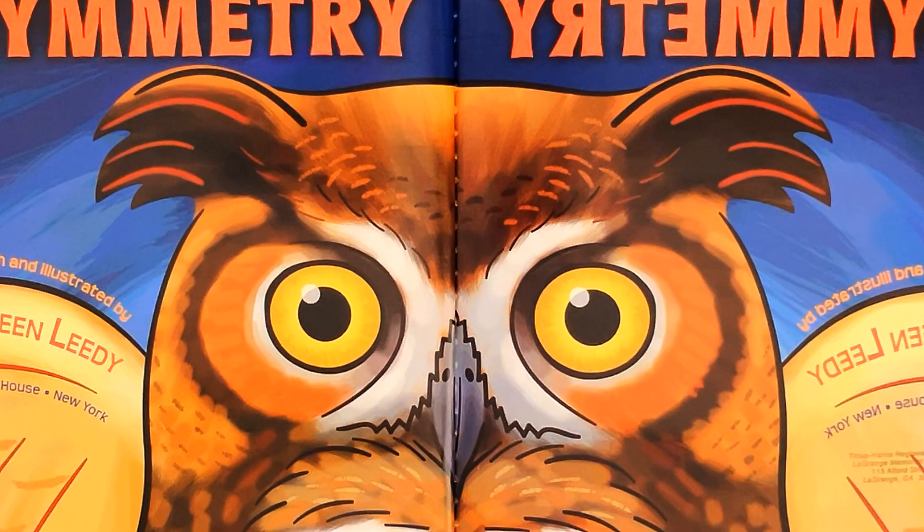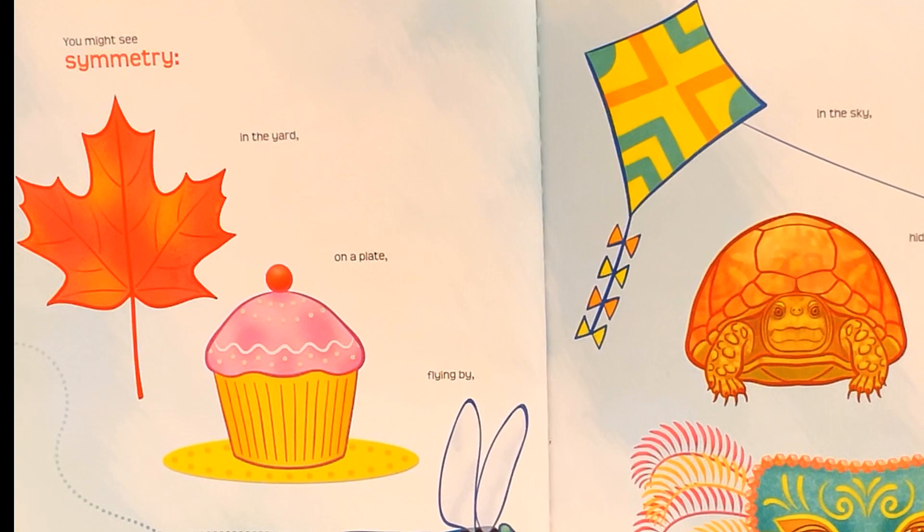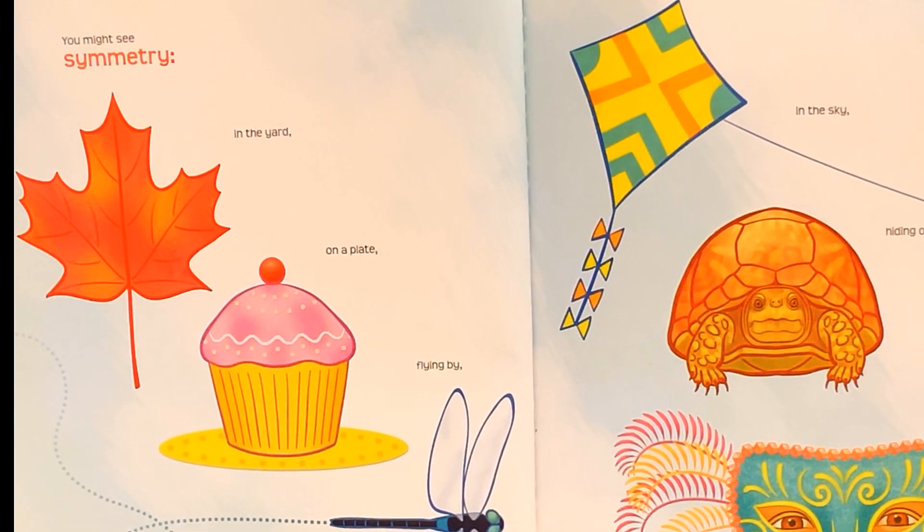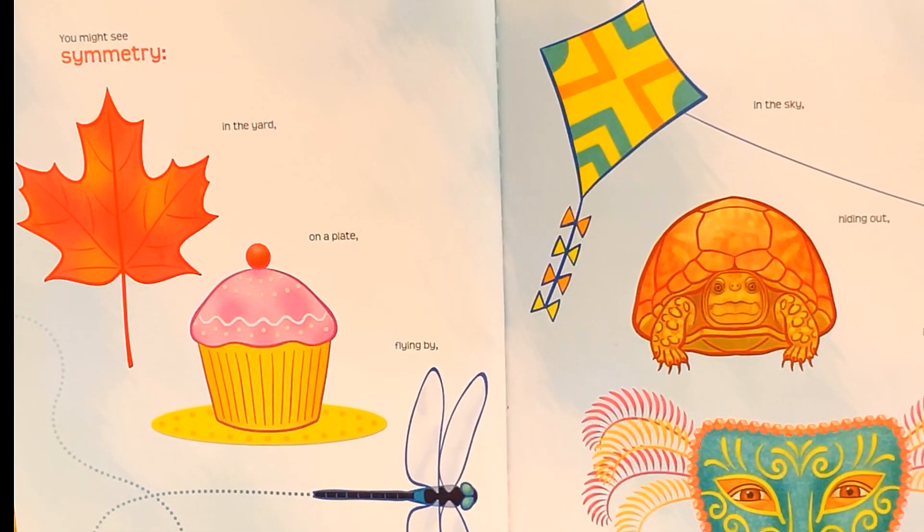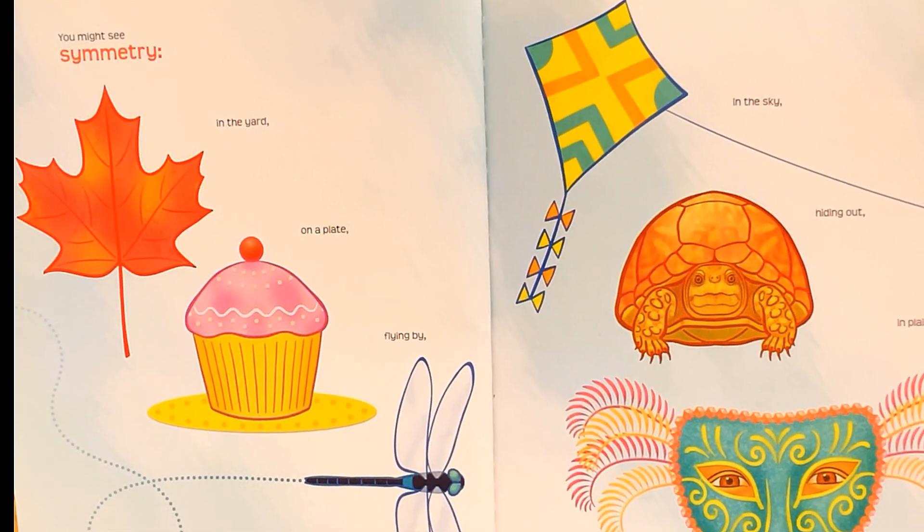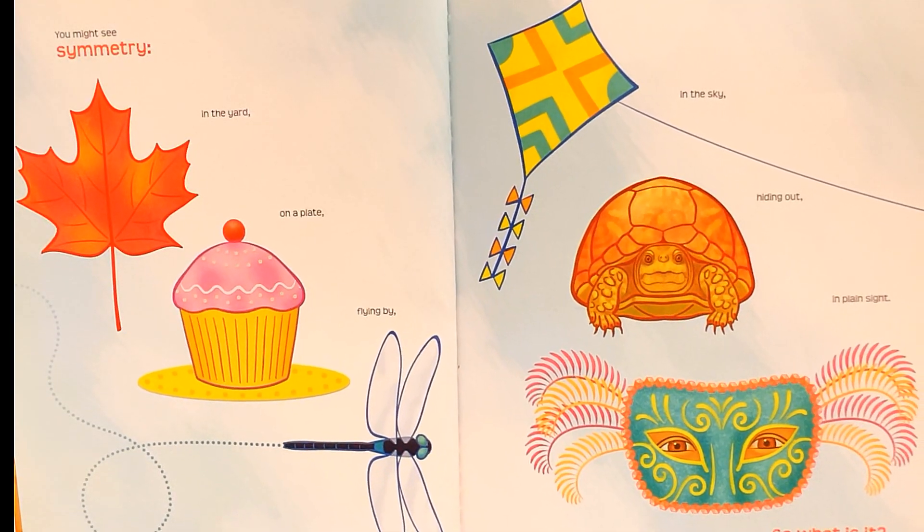Seeing Symmetry. You might see symmetry in the yard, on a plate, flying by in the sky, hiding out in plain sight. So, what is it?